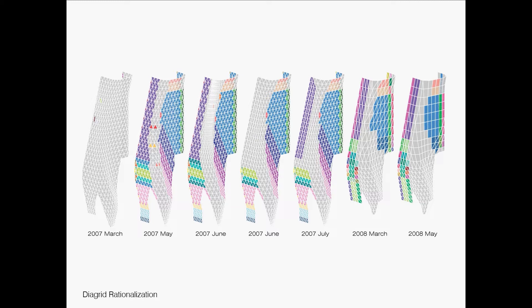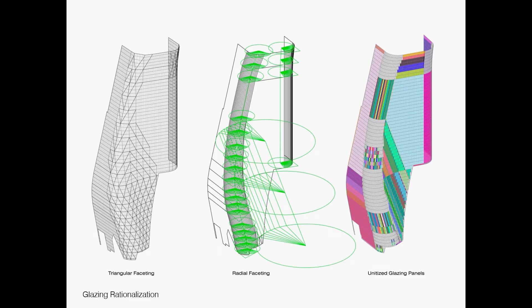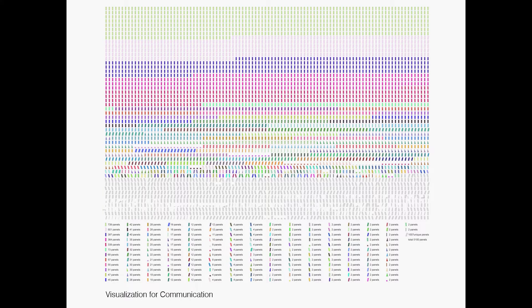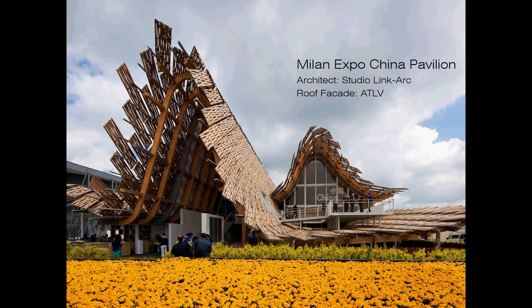The gray area is re-adjusted by the tension of the mesh relaxation algorithm. Another rationalization is on the glazing panel. Initially it was panelized using the diagrid center lines, but later we found a way to panelize with radial fasting — to remove tiny triangular panels which cannot be produced with glass. With radial fasting, you can replace those triangles with a rectangle, parallelogram, or trapezoid.